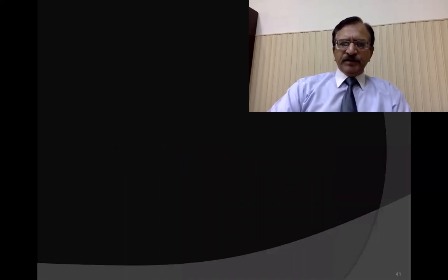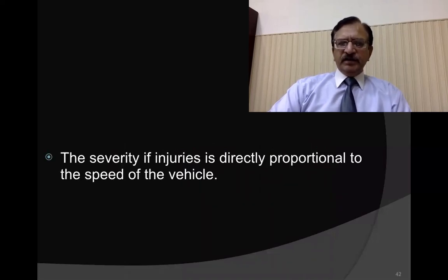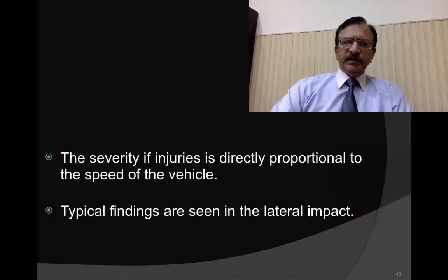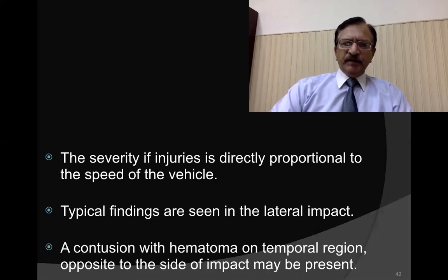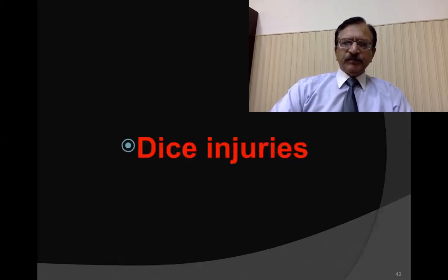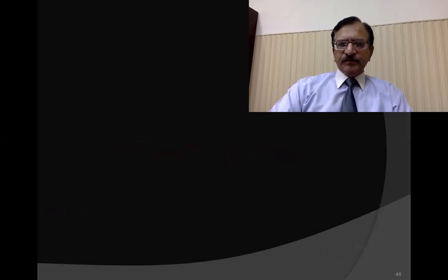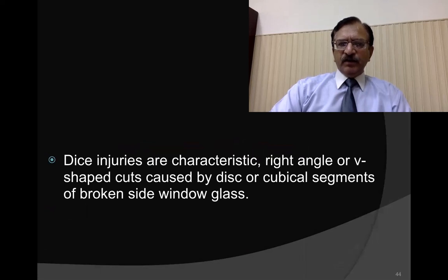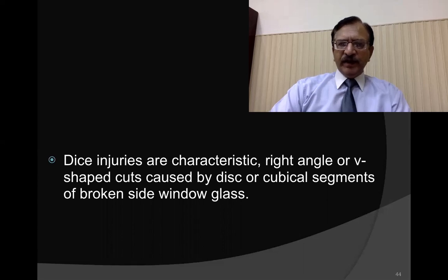In a lateral impact crash, where a vehicle is struck from the side, the severity of injury is directly proportional to the speed of the vehicle. Typical findings include contusion with hematoma on the temporal region on the side of impact. Dice injuries are characteristic right-angle or V-shaped cuts caused by disc or cubical segments of broken side window glass. These dice injuries appear on the face.